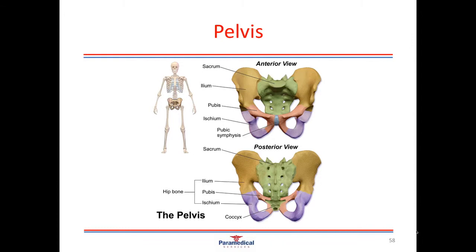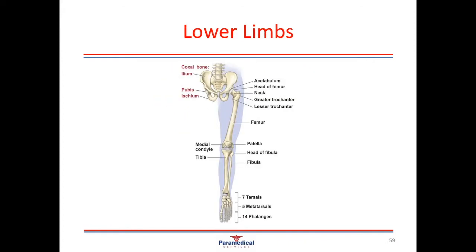The sacrum and the coccyx form the back portion of the pelvis or pelvic cavity. The sacrum is connected to both sides of the ilium, which are your hip bones. The front of your hip bones have what's called the iliac crest. The ilium are continuous with the pubis bone, which connects in the middle to form the pubis symphysis. The bone at the back that you can feel protruding just underneath the buttock when sitting is called the ischium. The pelvis is connected to the lower limbs by a ball and socket joint called the acetabulum.